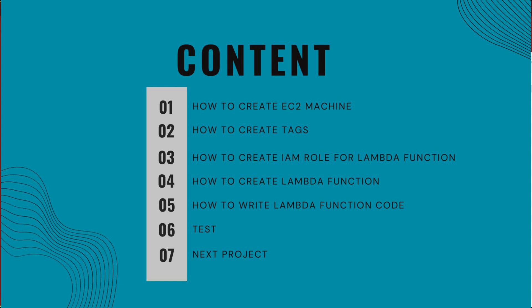Here are the topics we are going to cover in this video. We are going to start by creating EC2 machines, then assign tags to those machines. After that, we are going to create a role for the Lambda function and give access for EC2. Then we are going to create the Lambda function, write the code step by step explaining each part, and finally do the testing.